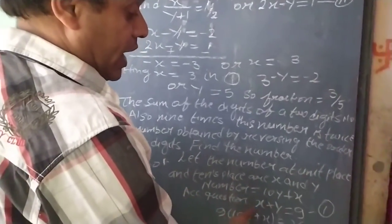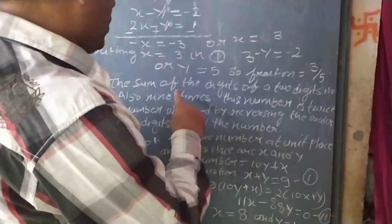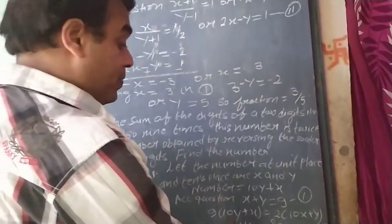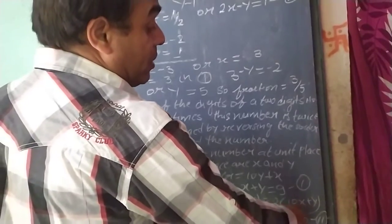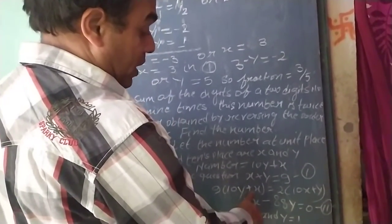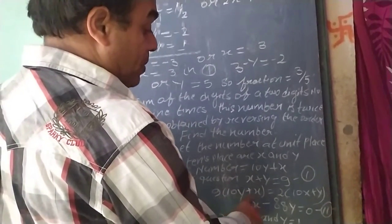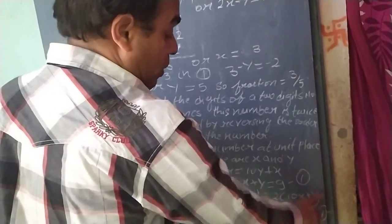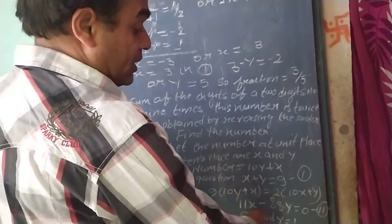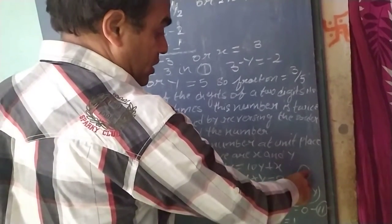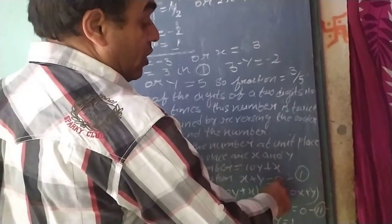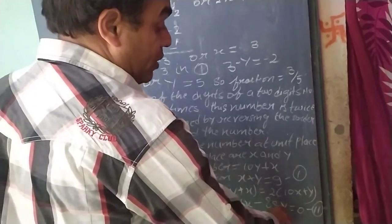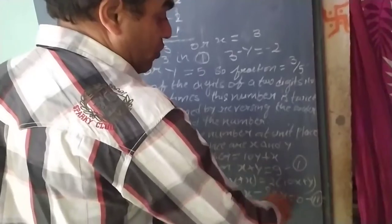Now according to question, x plus y equal to 9, and the sum of the 2 digit number is 9. And 9th time of the number is 2 times the reversing the number. So 9 into 10y plus x equal to 2 into 10x plus y. So we get 11x minus 88y. Equation number 1 is x plus y equal to 9. And 11x minus 88y equal to 0 equal to 2, that is equation number 2.